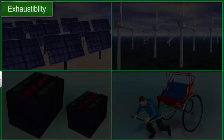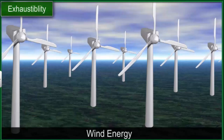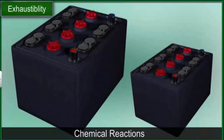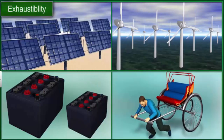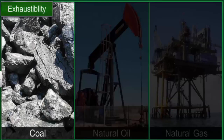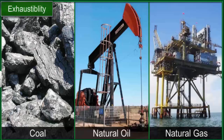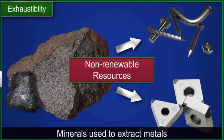Resources can also be classified based on whether they can be regenerated or lost forever once used. Resources like solar and wind energy, reversible chemical reactions, and physical power, which can be regenerated once used, are called renewable resources. Fossil fuels like coal, natural oil, and gas cannot be reproduced once used. The same applies to minerals used to extract metals. These are examples of non-renewable resources since they are lost forever once used.